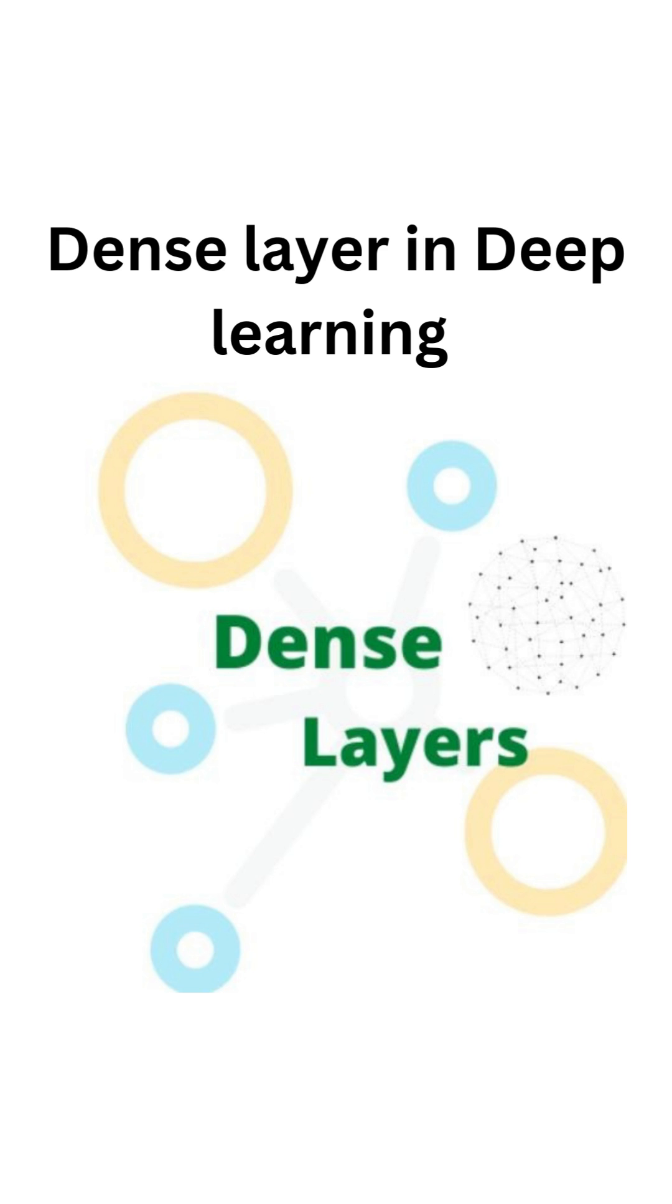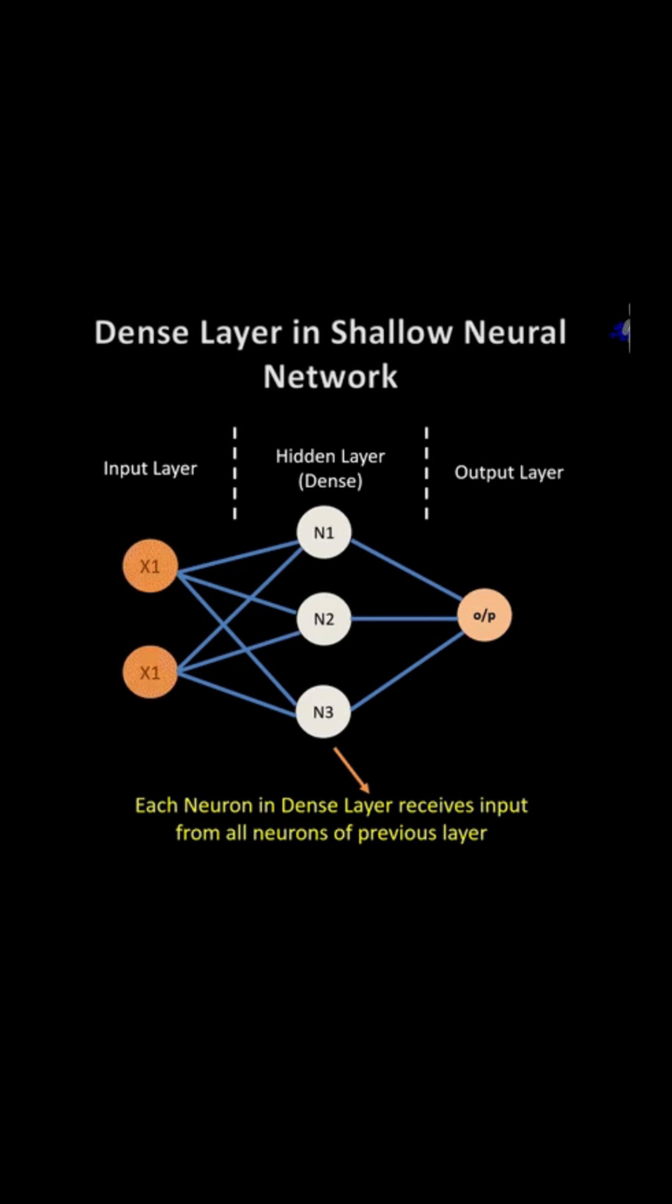Let's see about dense layer in deep learning. A dense layer is connected deeply with preceding layers in any neural network. Each neuron in the dense layer is connected to every neuron of its preceding layer.